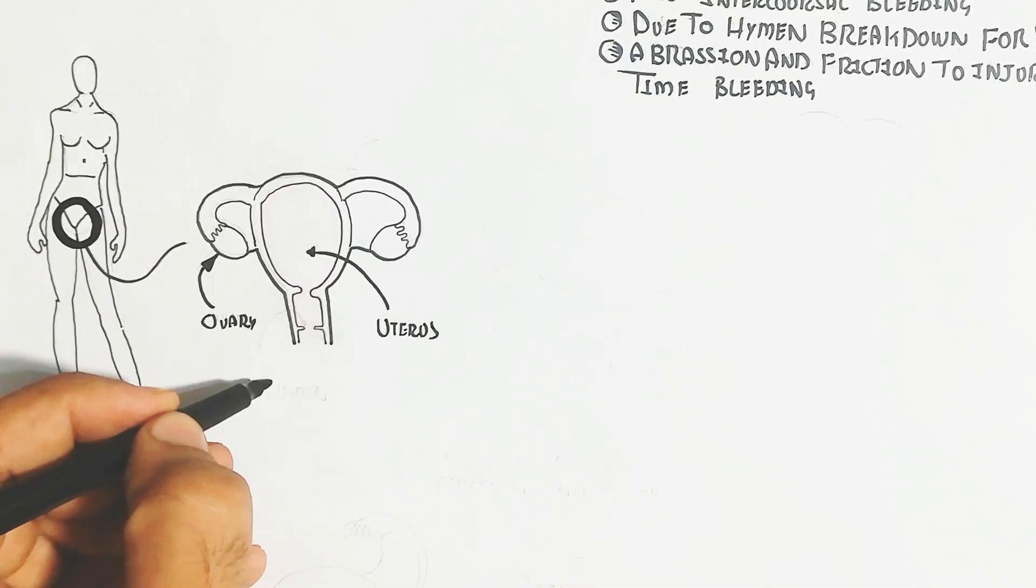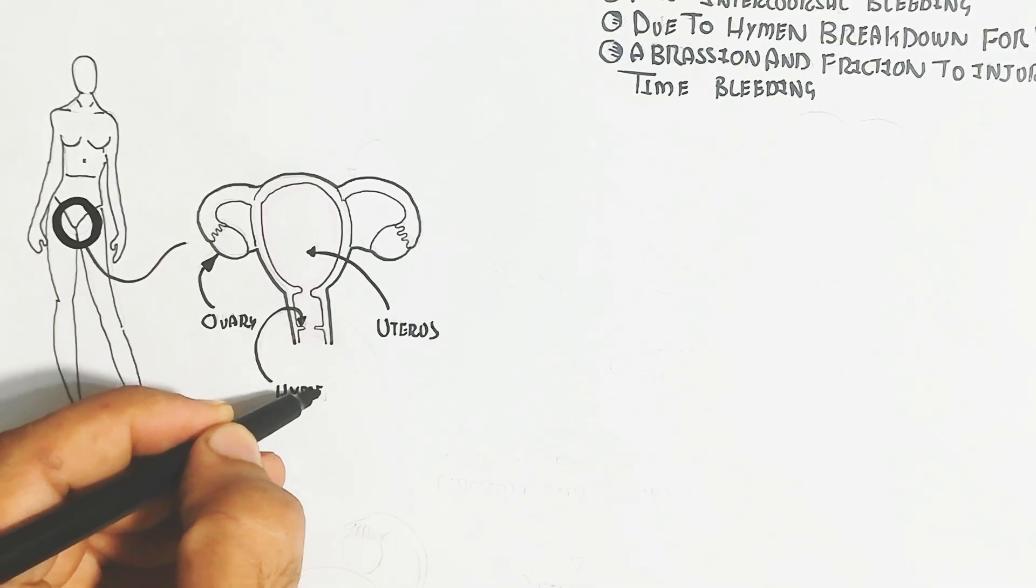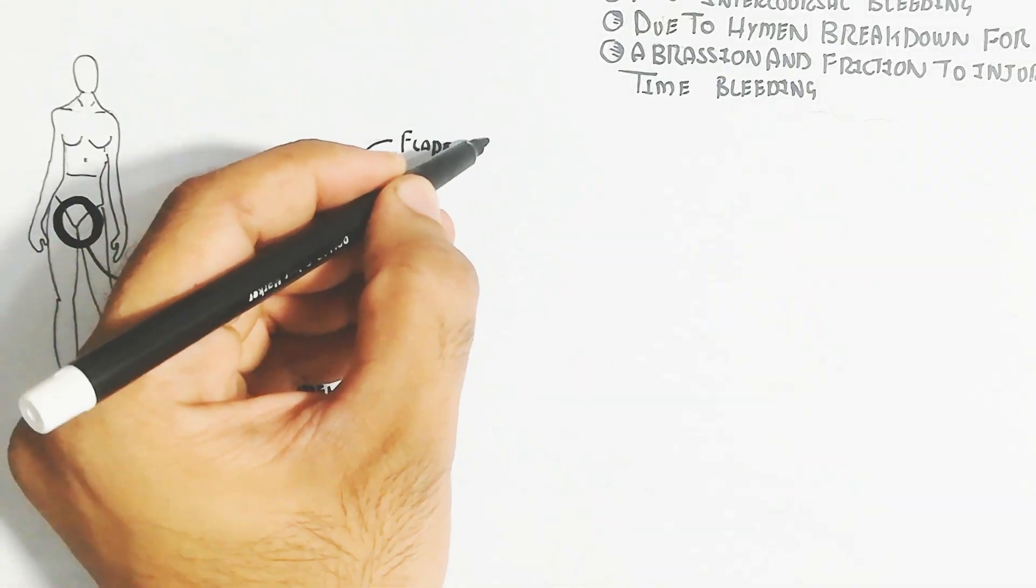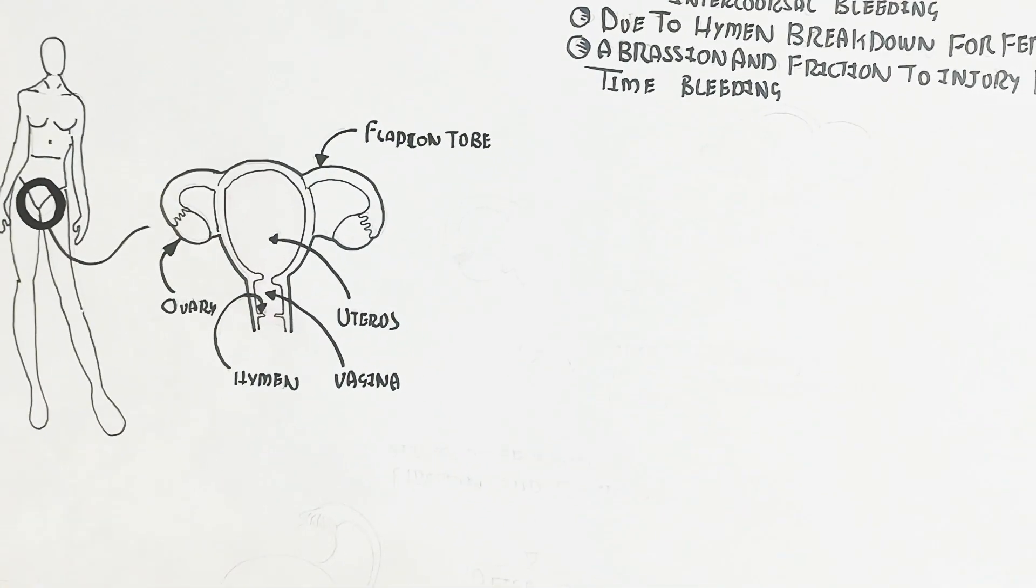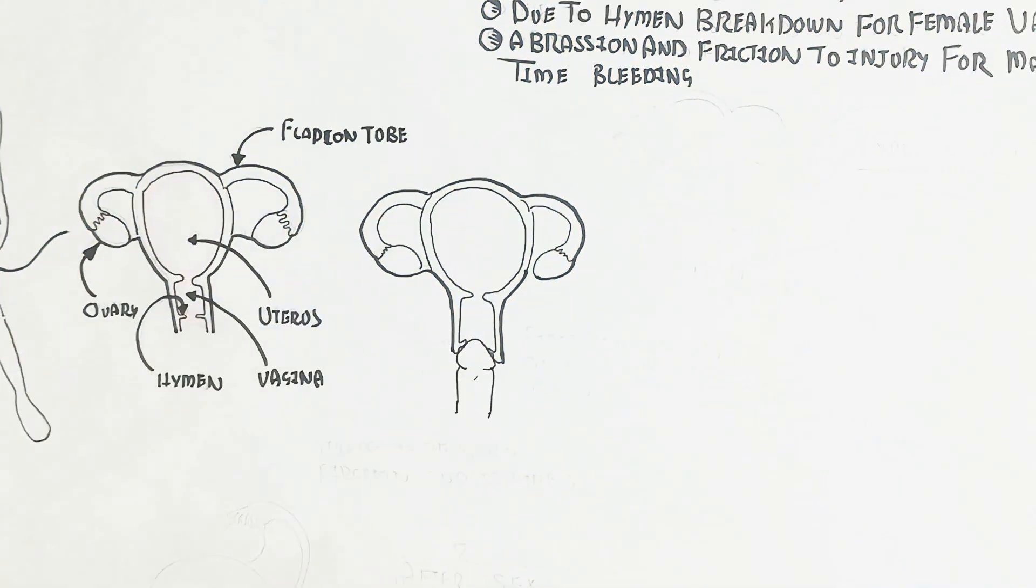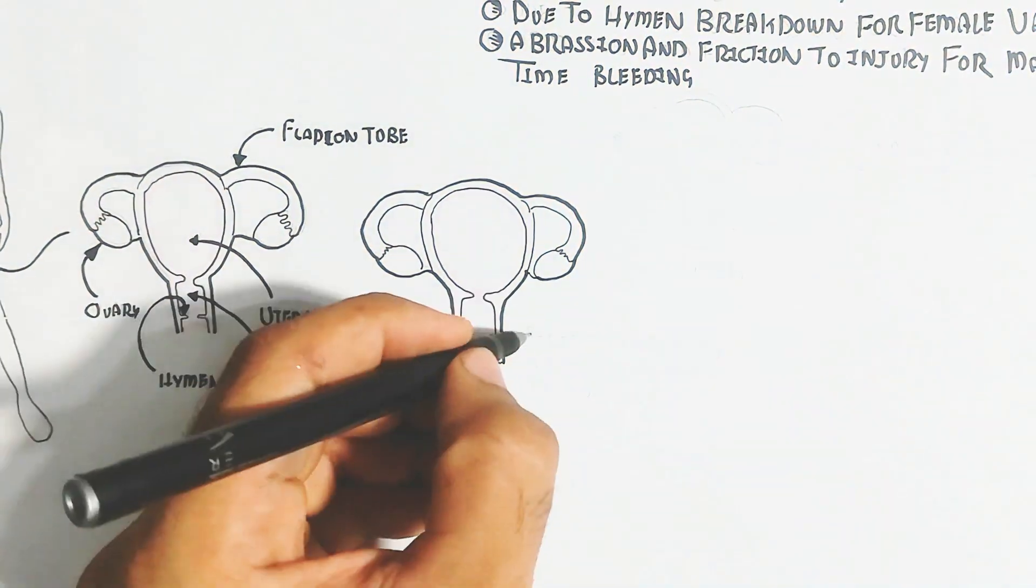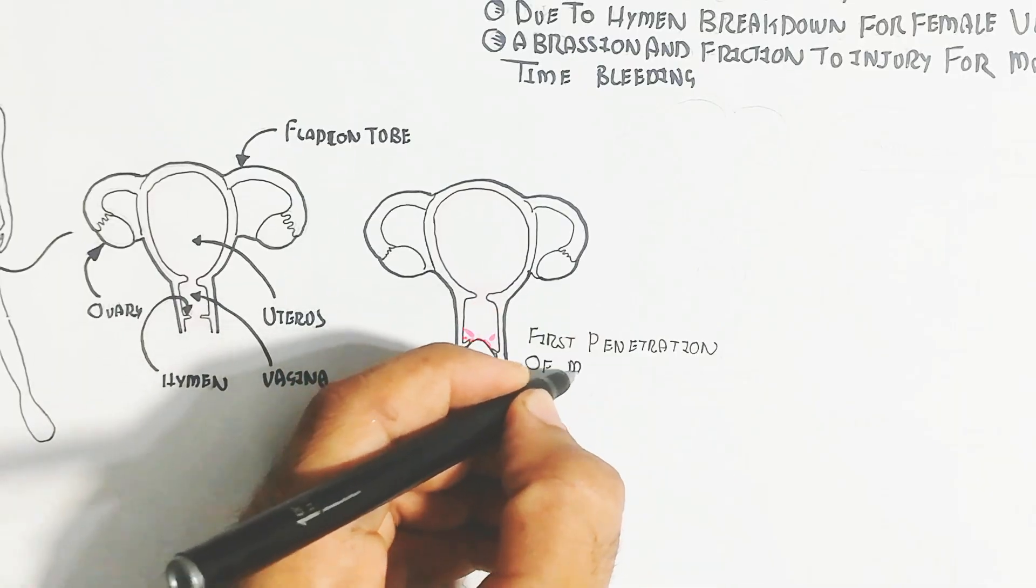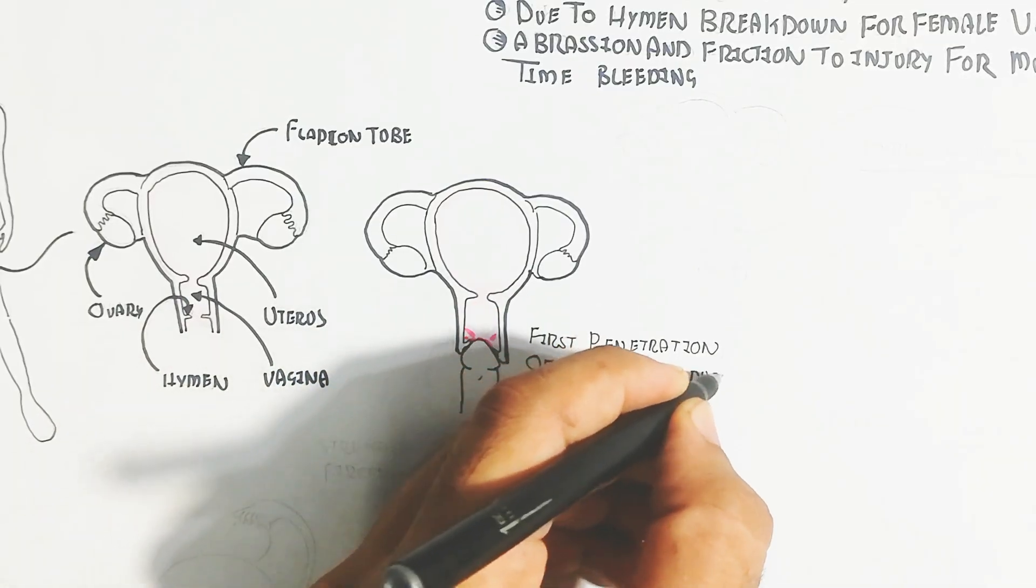This is the reproductive system of the female, containing fallopian tube, uterus, ovary, vagina, and hymen. When first intercourse or first penetration of male reproductive organ occurs, it will lead to stretching of vagina.